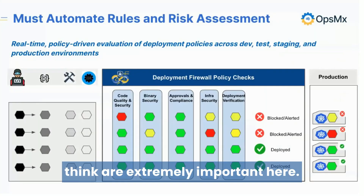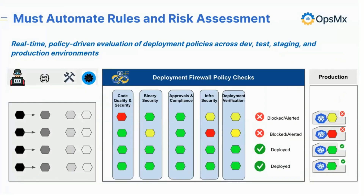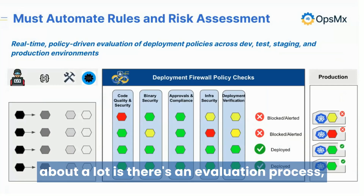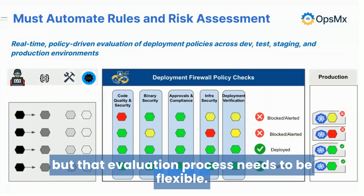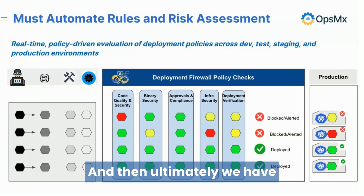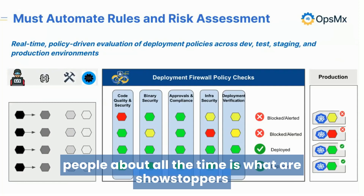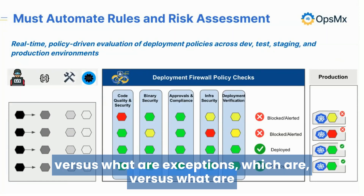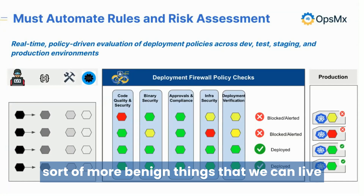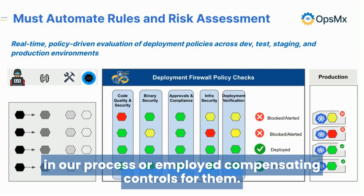Those are things that are extremely important. You have to automate that rules and risk assessment. There's an evaluation process, but that evaluation process needs to be flexible. One of the things we talk to people about all the time is: what are showstoppers versus what are exceptions versus what are more benign things we can live with because we've already countered those things further down in our process.